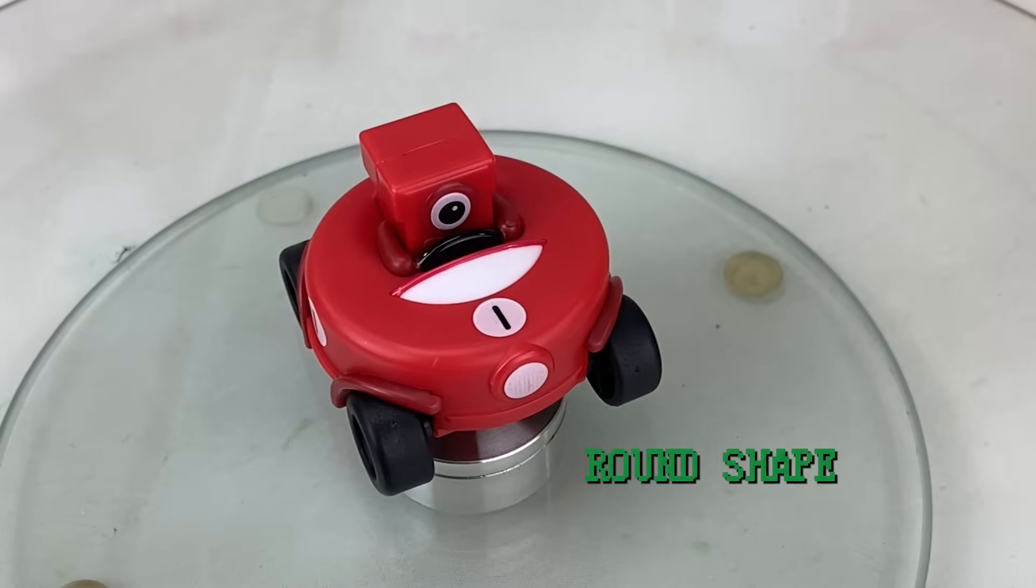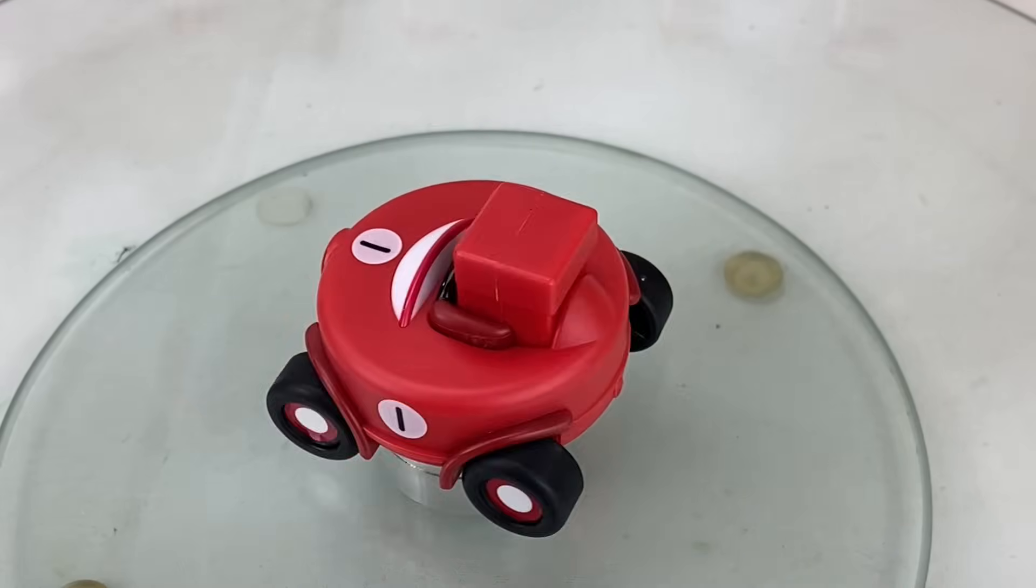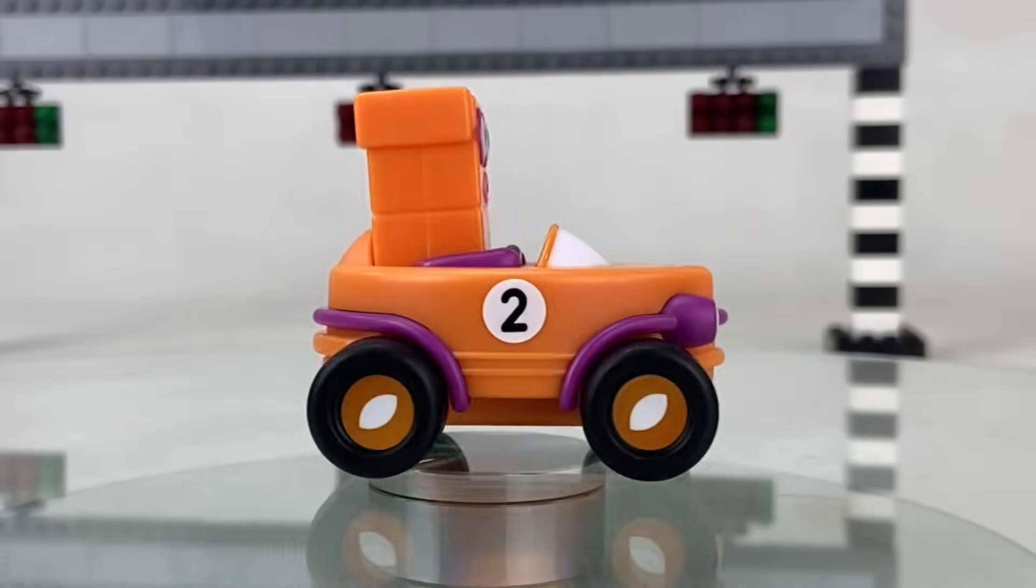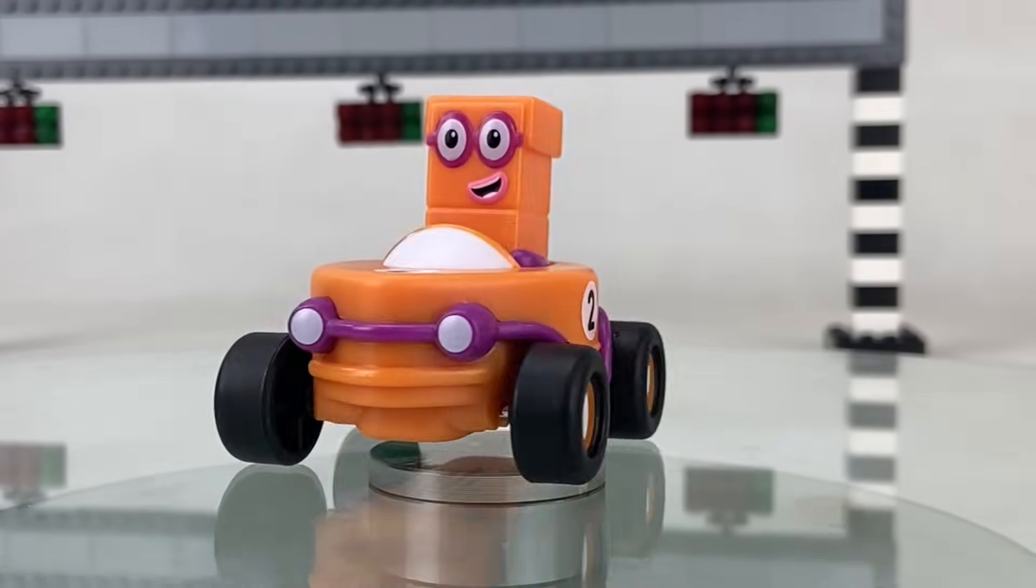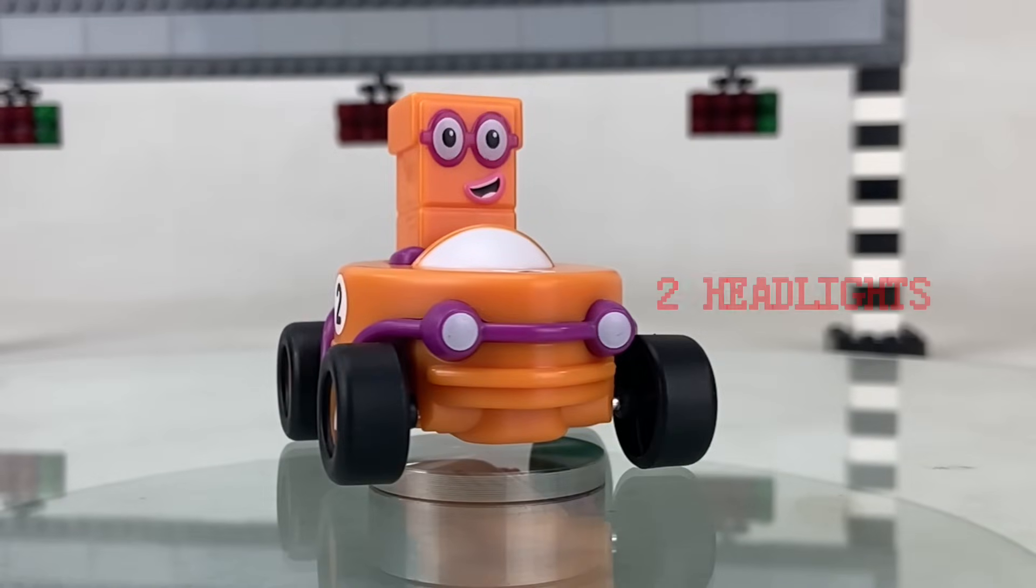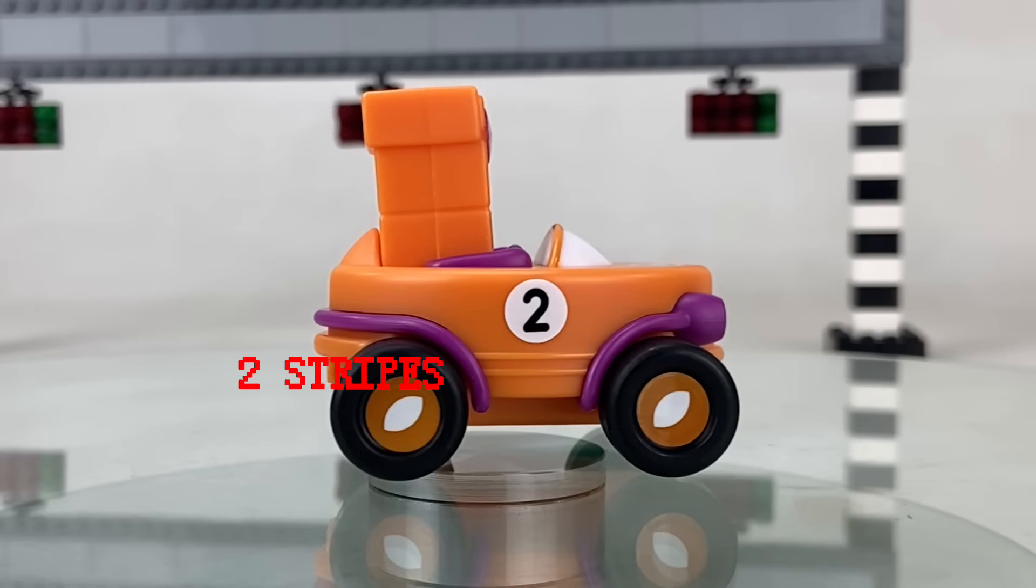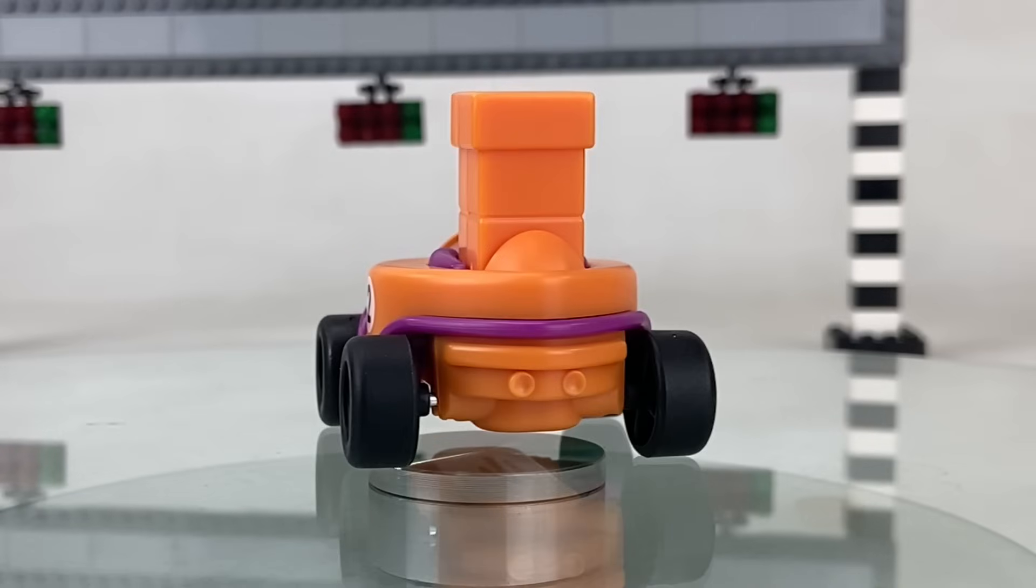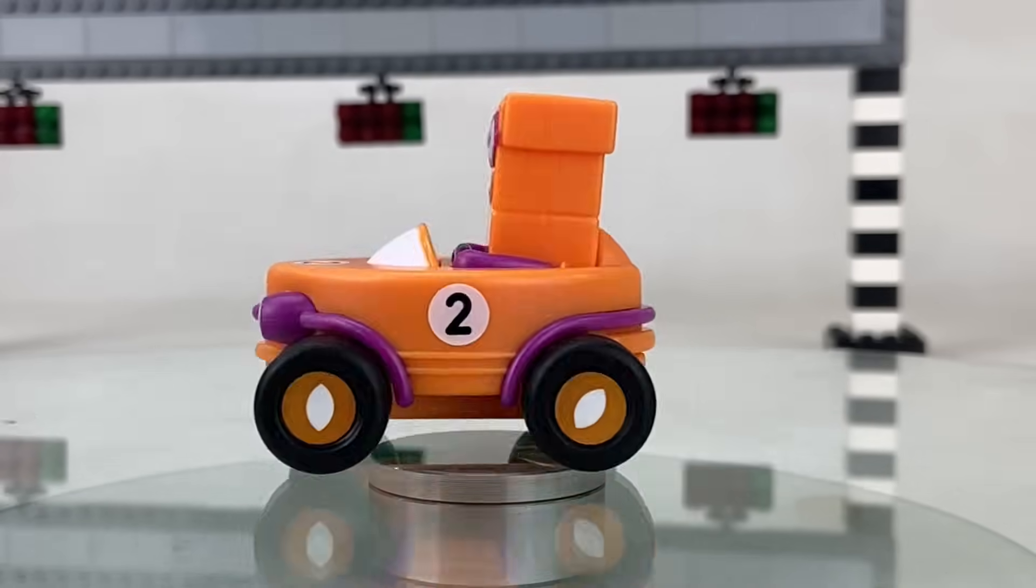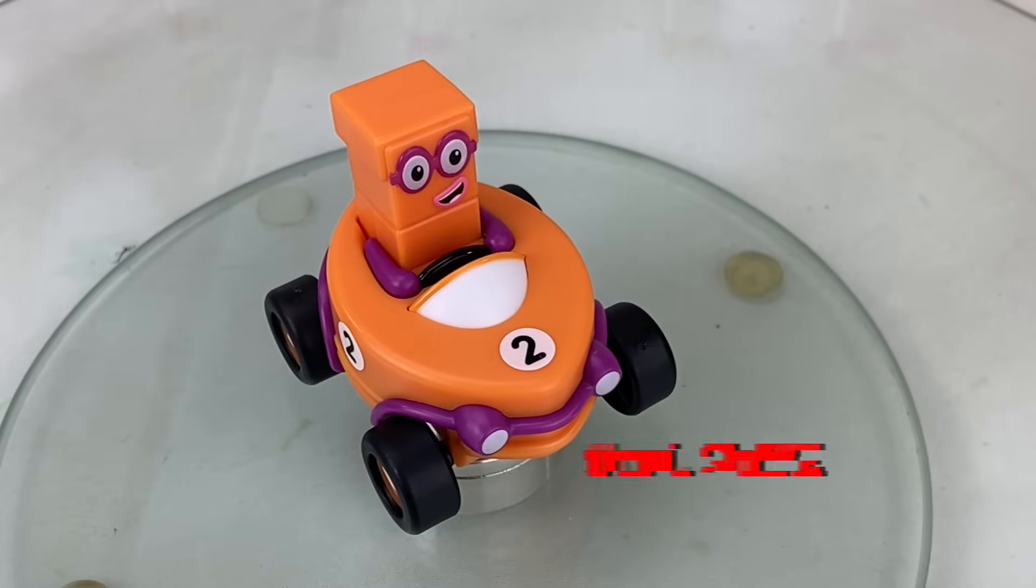Now driver number two is sporting an orange race car with two headlights and two stripes at the sides. The wheels have ovals with two pointed ends, and at the back of the car you'll see two exhaust pipes. His orange car is oval shaped with two pointed ends and it looks very aerodynamic.